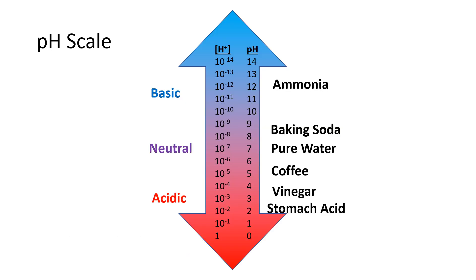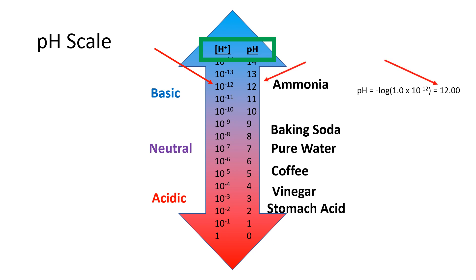This pH scale shows the concentration of H+ on the left and the corresponding pH on the right. Starting at the top, an ammonia solution, for example, has an H+ concentration of around 1.0 times 10 raised to the minus 12. The negative log of this gives us a pH of 12.00. Any pH above the neutral pH of 7.00 is called a basic solution. Examples of basic solutions are strong hydroxide solutions, ammonia, and baking soda.